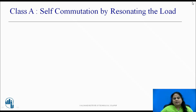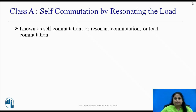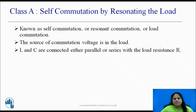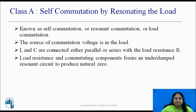Let us see class A commutation. It is also known as self commutation, resonant commutation, or load commutation. In this commutation, the source of commutation voltage is in the load. The commutating components L and C are connected either in parallel or in series with the load resistance R. The load resistance and commutating components form an under-damped resonant circuit to produce a natural zero.